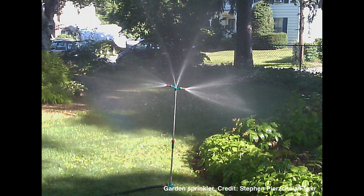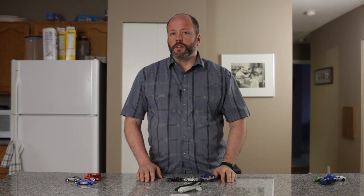Astronomers have only recently figured out why these arms exist in the first place. Originally, they suspected it might be like a garden sprinkler, with material fountaining out from the center of the galaxy, or channeled by magnetic fields. They also thought that these arms might be transient features, appearing and disappearing over time. But new evidence and simulations show they're long-lasting. They believe the arms themselves form as the result of giant molecular clouds of hydrogen, which initiate the arms and keep the shape sustained over billions of years.